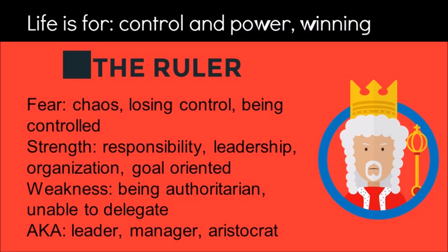The final archetype is the ruler. To the ruler, life is for control, power, and winning. The ruler fears chaos, losing control, or being controlled by others. Their strengths are responsibility, leadership, organization, and being goal-oriented, while their weaknesses are being authoritarian or unable to delegate. The ruler is often called the leader, manager, or the aristocrat.